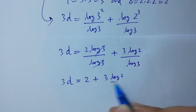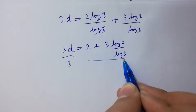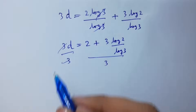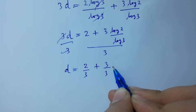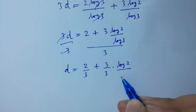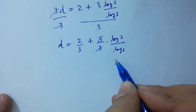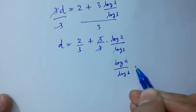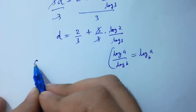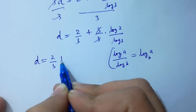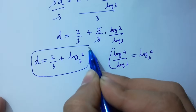Applying the log power rule, divide by 3 on both sides — 3 and 3 cancel. D equals 2 over 3 plus (log 2 over log 3). Since log A over log B equals log A to the base B, D equals 2/3 plus log 2 to the base 3, which is the value of D.